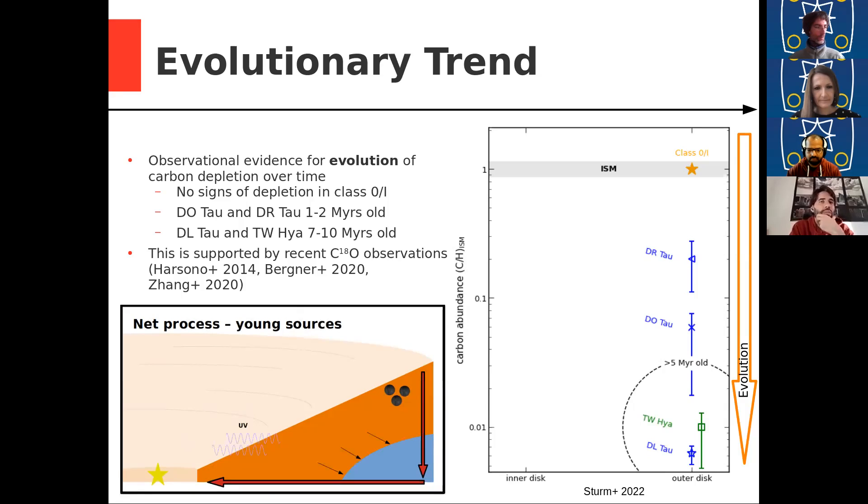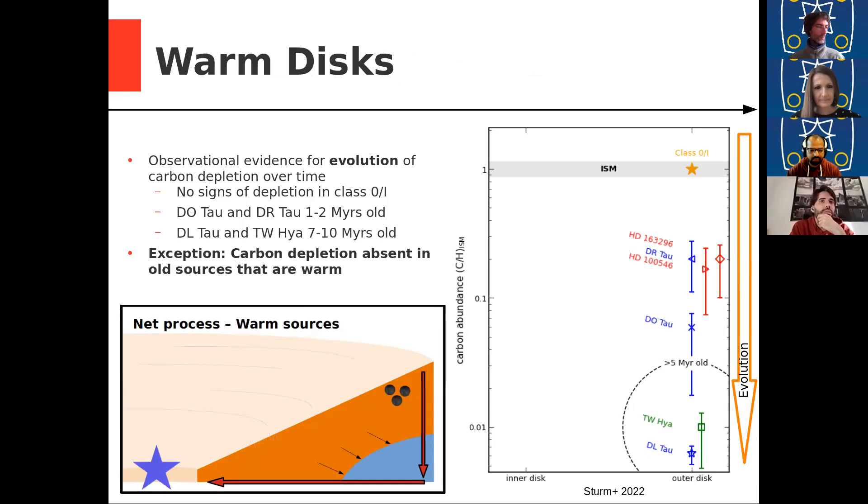Another exception to this are actually warmer sources. So if you have a very hot star in the center, then the region is also much smaller where carbon can freeze out or CO can freeze out. And we can see that in these two Herbig stars that have very similar depletion as DQ Tau, a very young source. But these Herbig stars are actually quite old. They are older than TW Hydra and DL Tau. But because they are that warm, they don't have that much depletion.